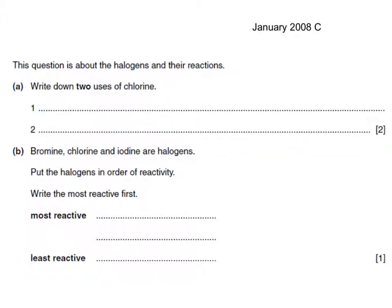This question is about the halogens and their reactions. Write down two uses of chlorine — you have to learn three of them. Two examples are making PVC plastic and sterilising water.